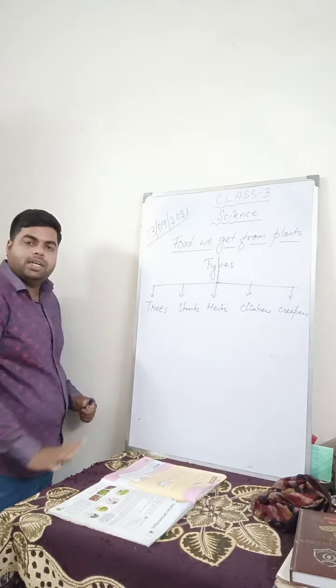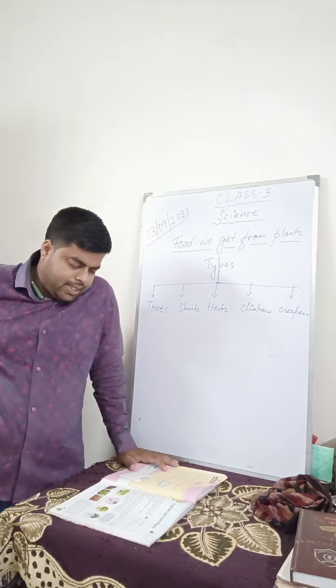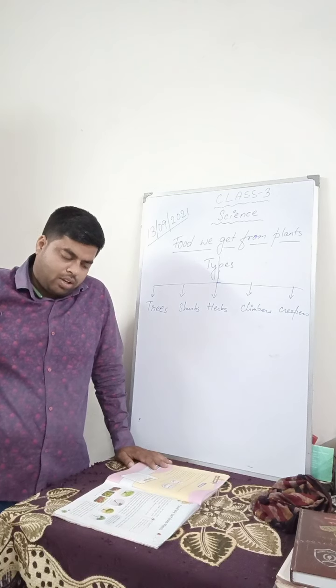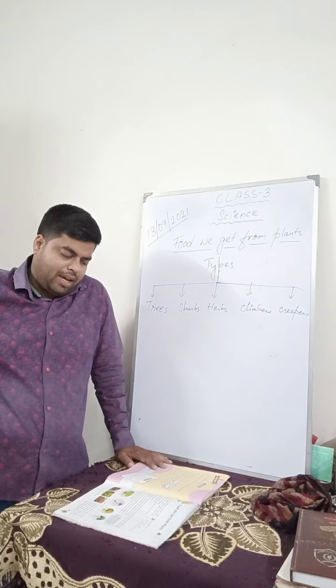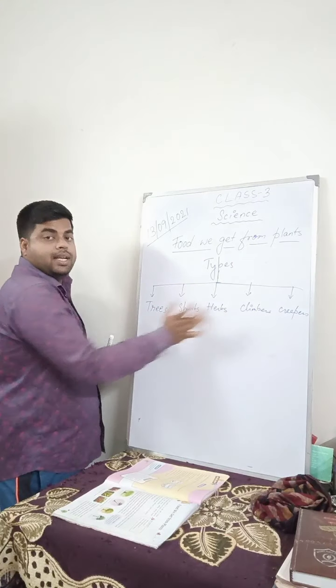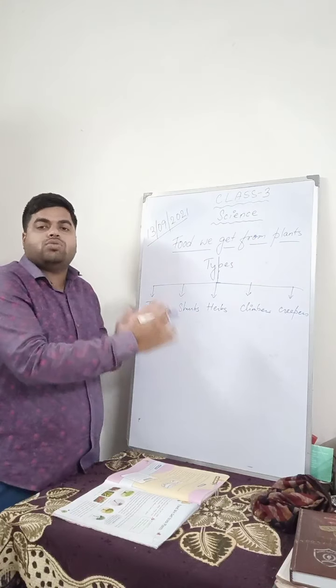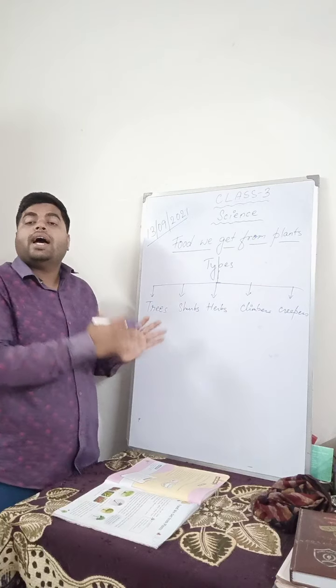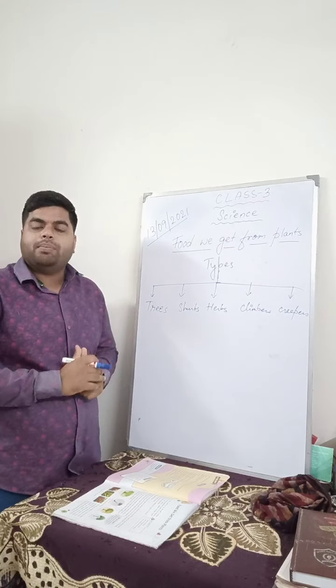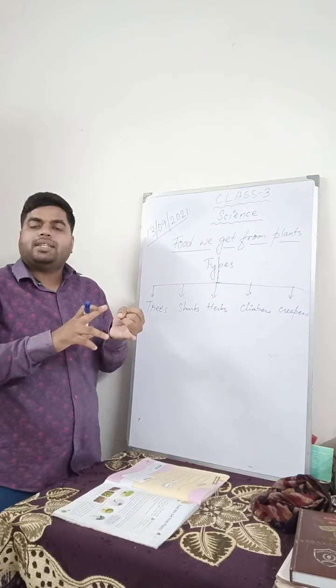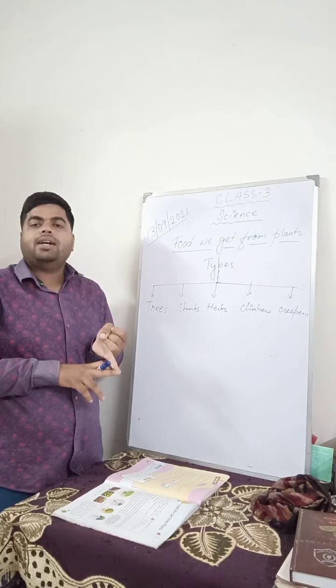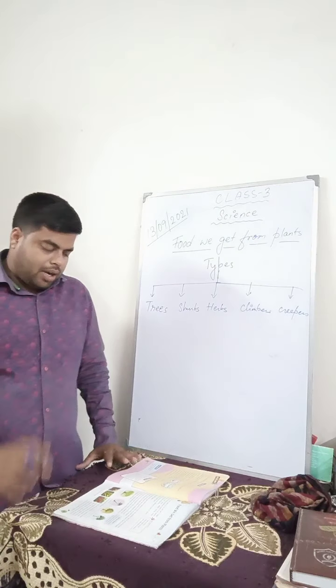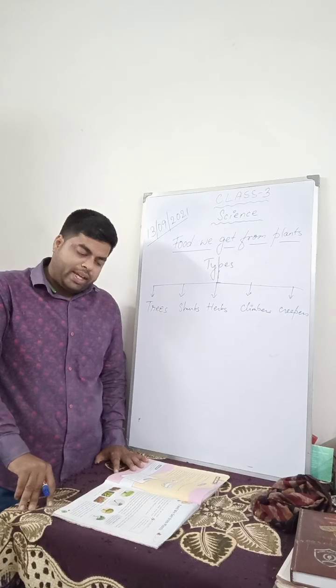So these are the different types of plants. Let us see. Plants differ from each other based on their size and the type of stem they have. These different types of plants, why are they categorized, why are they divided into different sections? According to the size as well as the type of stem. In some, the stems are very strong, very hard. In some, the stems are very weak. Some plants are big and strong while some are weak and small.